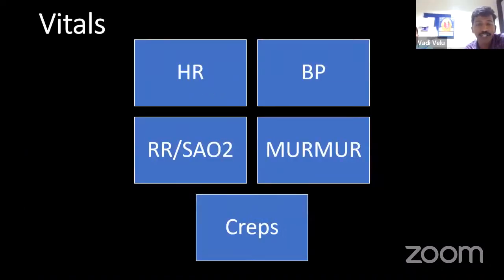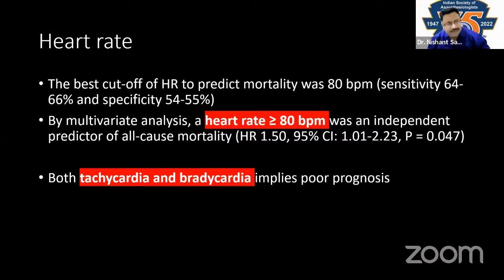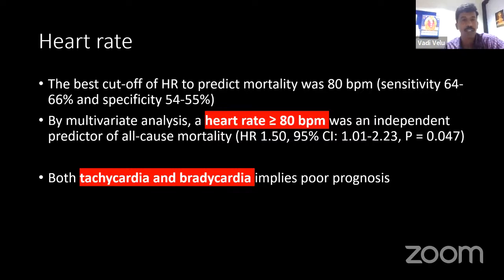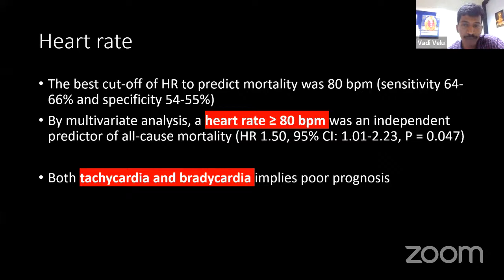It is better to explain to the patient's attendants and intubate at the ER so that there is time for the procedure. These are the five important things monitored by everyone involved in the care of acute MI patients: heart rate, blood pressure, respiratory rate, saturation, auscultation for murmurs and cardiac class. Heart rate more than 100 in an MI patient is not good, and studies have shown that heart rate more than 80 beats per minute is associated with increased mortality. Extreme bradycardia is also not good.